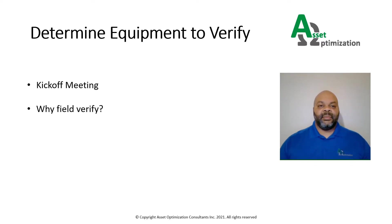When developing an RBI implementation program, one of the most important steps is determining what assets or equipment will be part of the scope. Part of determining that scope is the field verification process. Usually a list of equipment that needs to be verified is established during the kickoff meeting, or the early part of a project when the scope is determined. The equipment list is generated by the owner user, as they know their equipment and are more adept in determining what should be on the list.